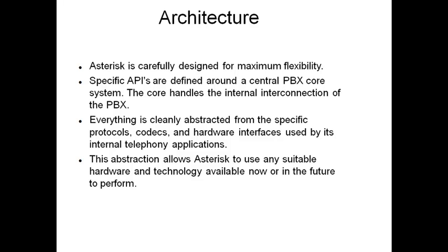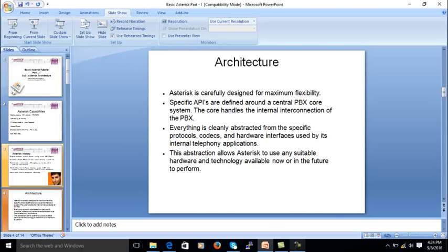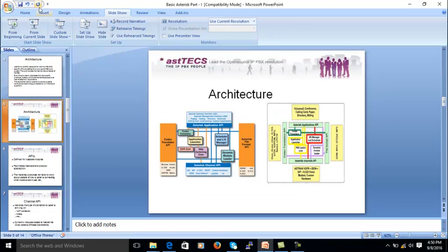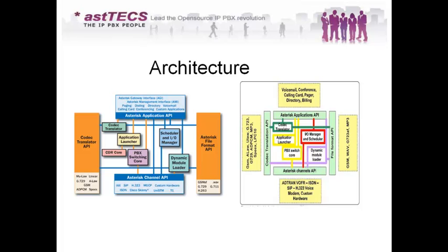Everything is cleanly abstracted from the specific protocols, codecs, and hardware used by internal telephony applications. This abstraction allows Asterisk to use any suitable hardware, technology, or protocol available now or in the future. Asterisk architecture is built of four different APIs: the Codec Translation API, the Asterisk Application API, the Asterisk File Format API, and the Asterisk Channel API. The PBX core handles the interconnection of these APIs.